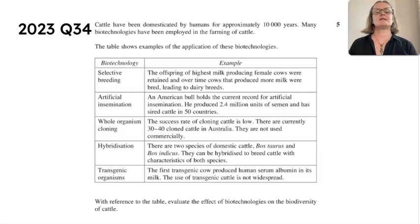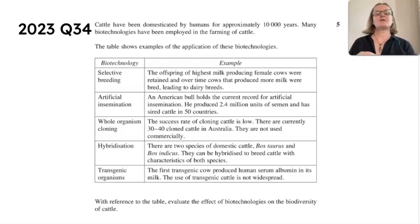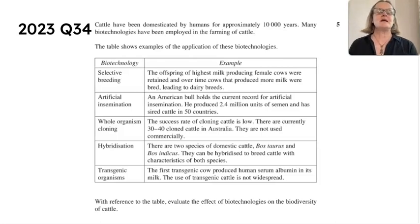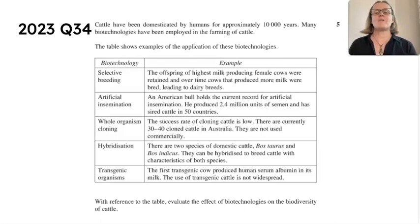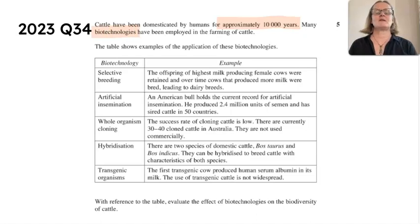Let's have a look at the 2023 paper, question 34. It's got a great stimulus, so it's good — even if you didn't remember anything about domesticating cattle, because it's all laid out for you here. Let's read the stimulus and make sure we engage with all of it. Cattle have been domesticated for approximately 10,000 years, and many biotechnologies have been used in the farming of cattle.